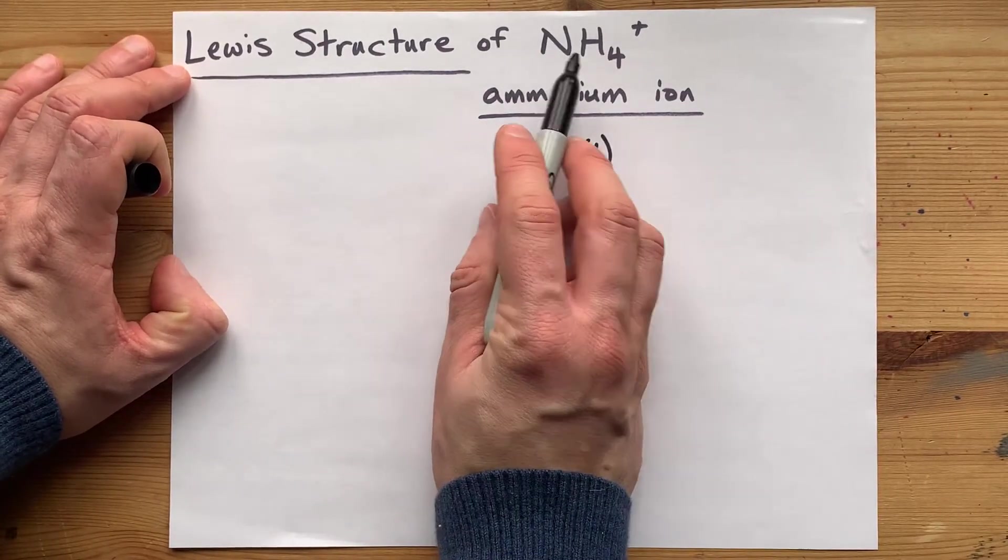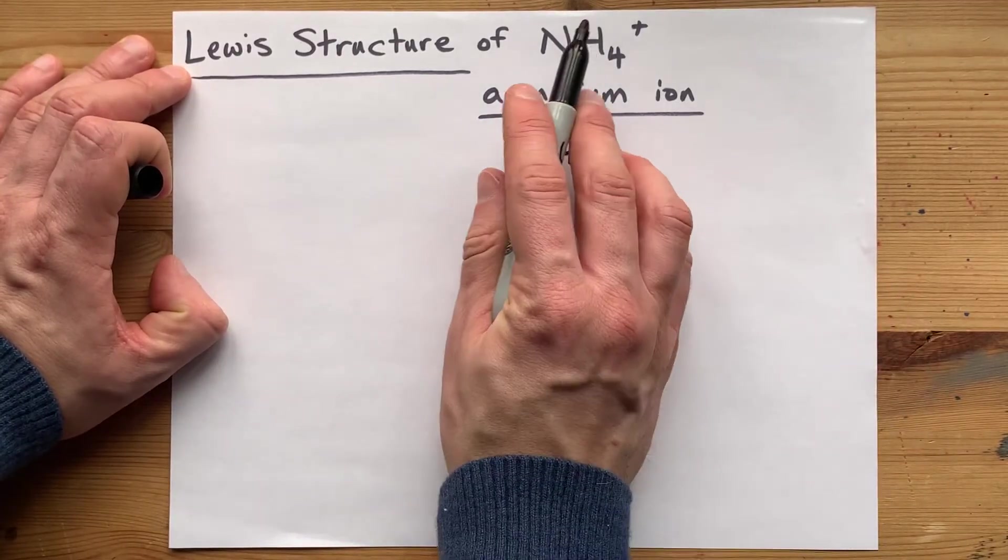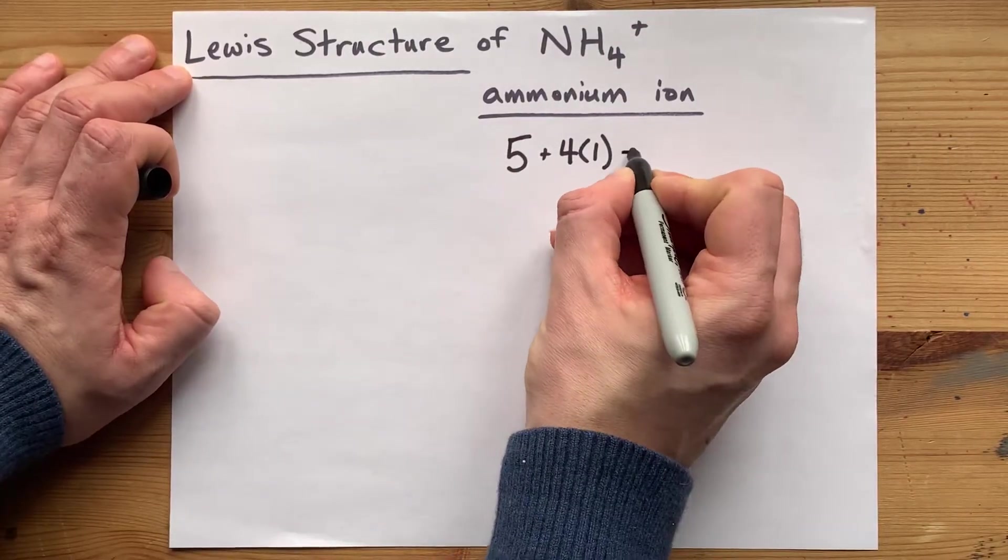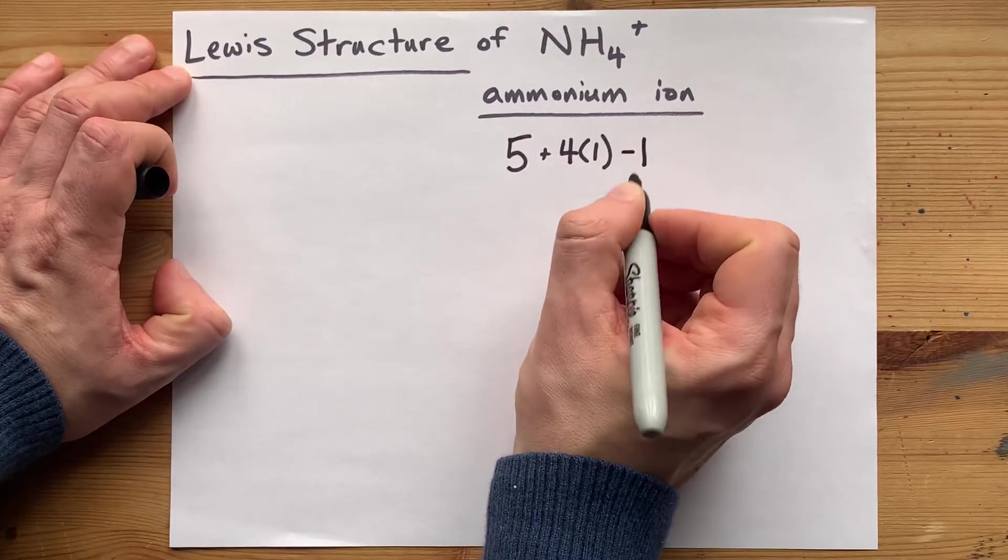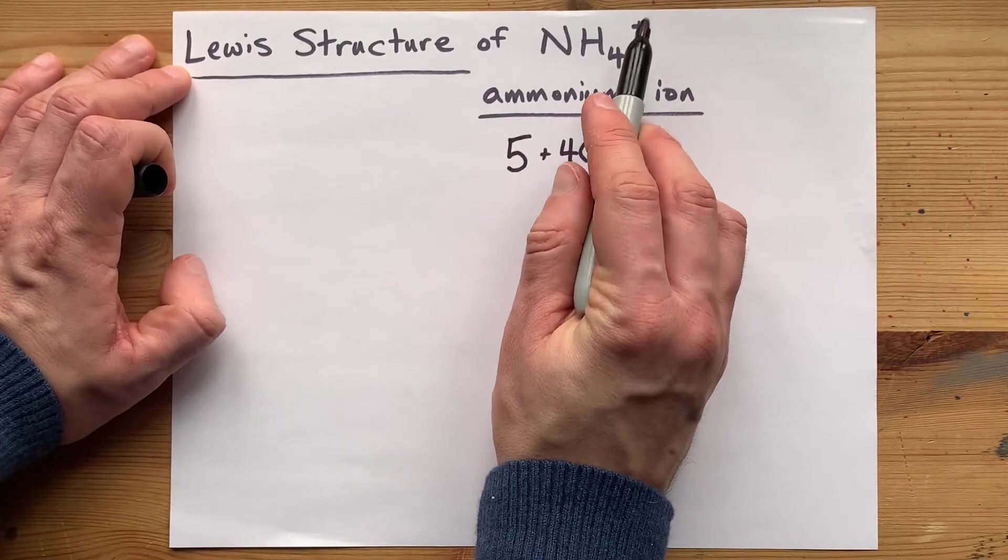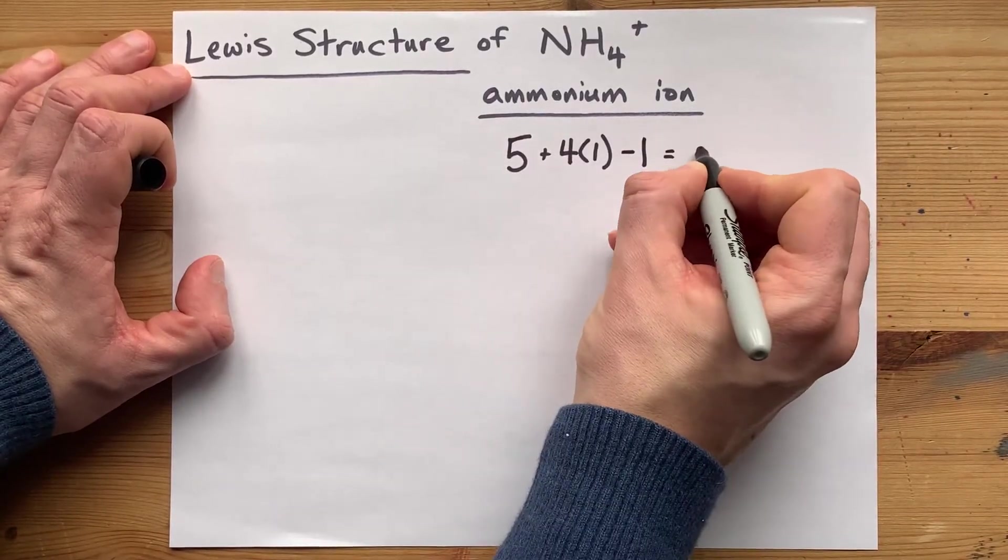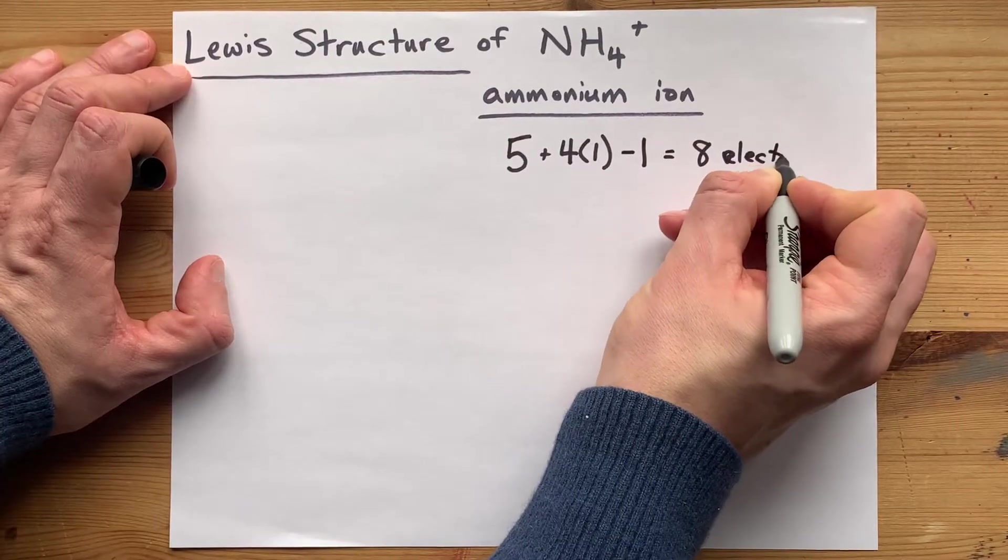A nitrogen and four hydrogens normally totals nine valence electrons total, but the positive one charge on the ion means you have to take one of those electrons away. Taking away a negatively charged electron is what gives you the positive charge. So we need to draw five plus four minus one equals eight valence electrons in the Lewis structure.